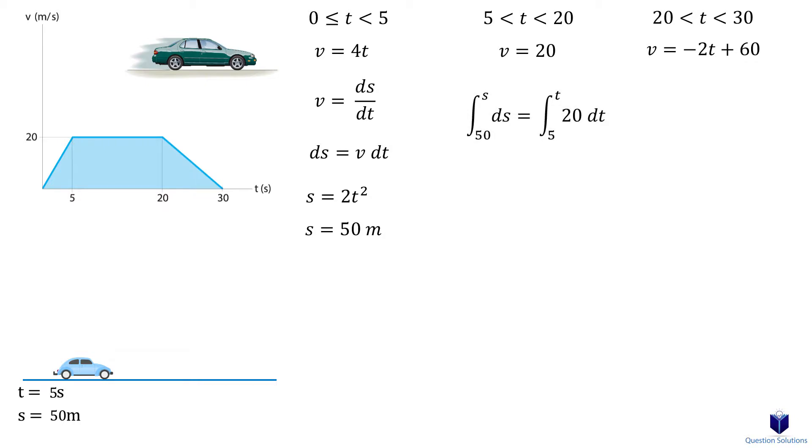For this, the lower bound for the integral starts at 50 meters, and the time starts at 5 seconds. Solving gives us s equals 20t minus 50. Now we will substitute a time value of 20 to figure out the displacement at that time.